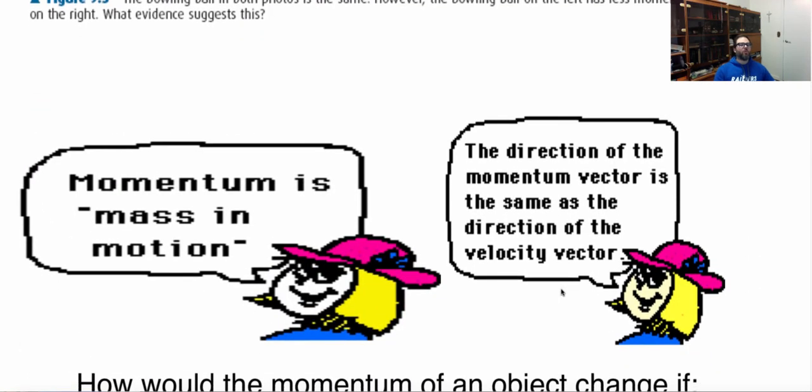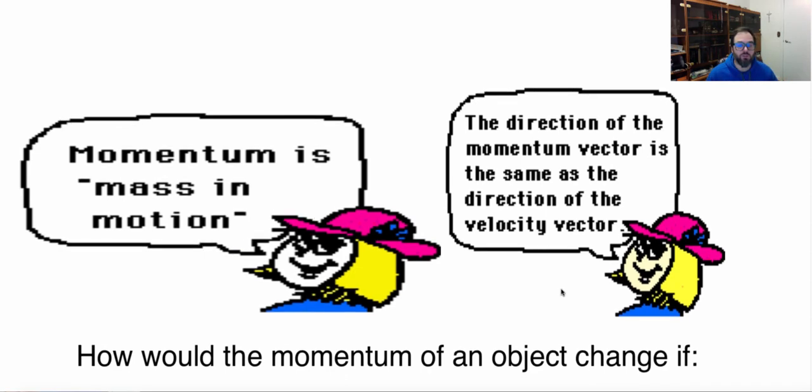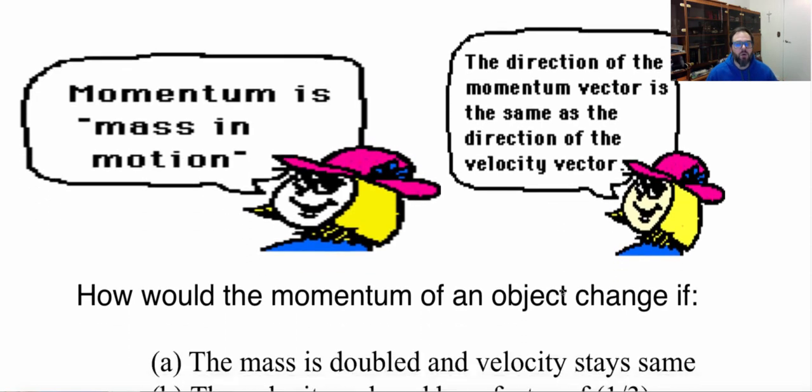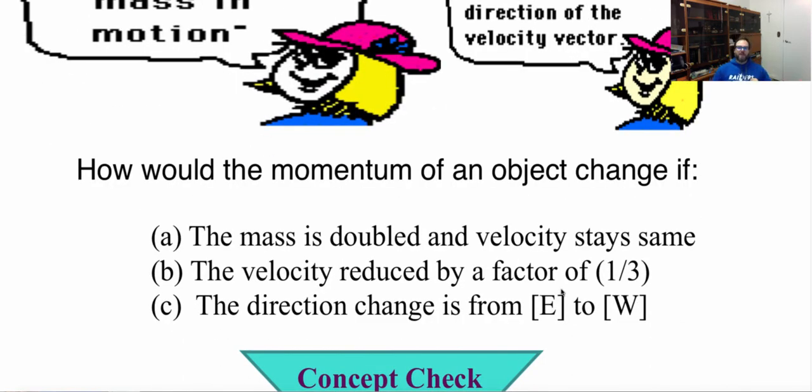So now I have some things here for you guys to think about. Basically, let's overview what we've learned is momentum. Momentum is mass and motion. So the motion of a mass is momentum. The direction of a momentum is a vector. It's the same as the direction of the velocity. So momentum is related, its vector is related to the velocity. So how would a momentum change if the mass is doubled and the velocity stays the same?